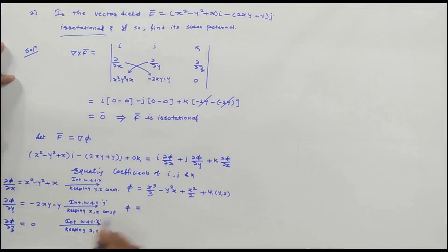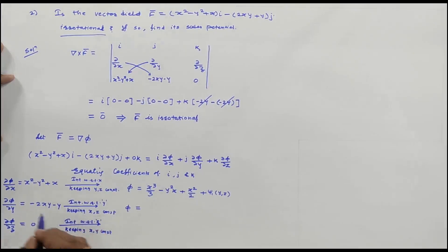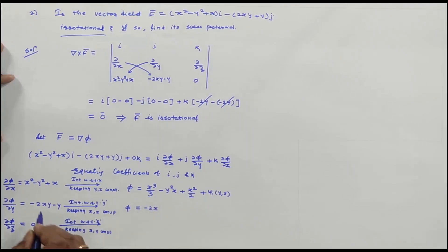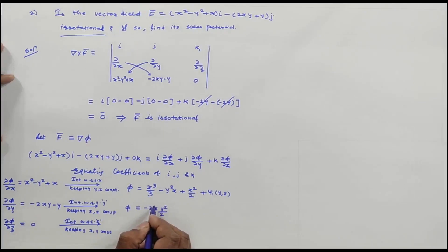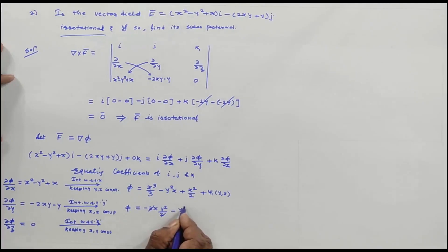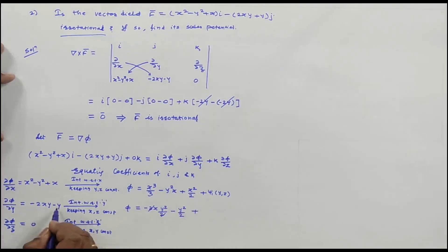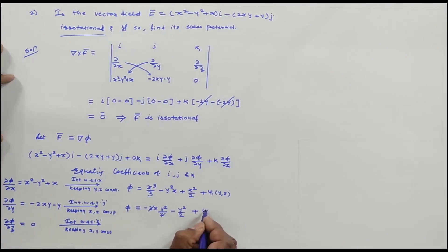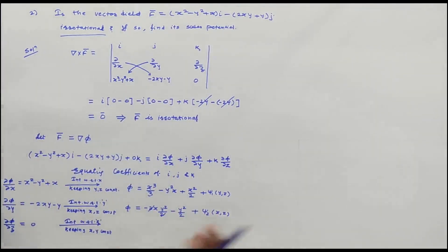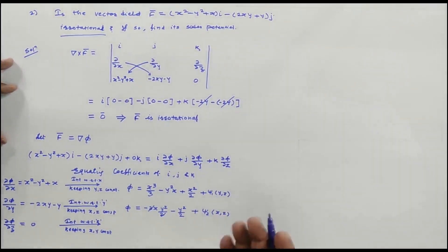By solving the three equations and finding values of ψ₁, ψ₂, ψ₃, we get φ directly. The shortcut: write common terms once and all uncommon terms. Common term: -xy². Uncommon terms: x³/3, x²/2, -y²/2. So φ = x³/3 - xy² + x²/2 - y²/2 + C. This is the scalar potential associated with the given vector field.